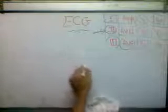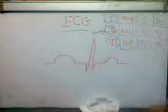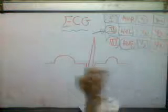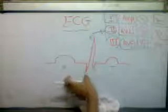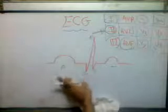The normal wave is PQRST. This is the P wave, and this is QRST. We have to know two things: how it generates and from where it generates.